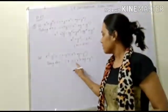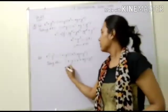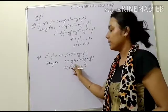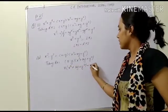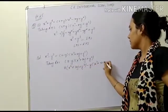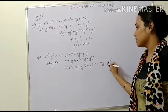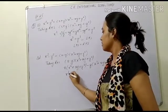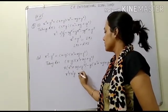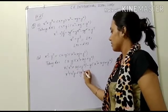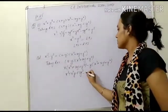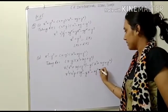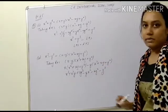Multiply x into the complete bracket: x into x squared gives x cubed, x into xy gives plus x squared y, x into y squared gives xy squared. Then minus y into x squared gives minus x squared y, minus y into xy gives minus xy squared, minus y into y squared gives minus y cubed.